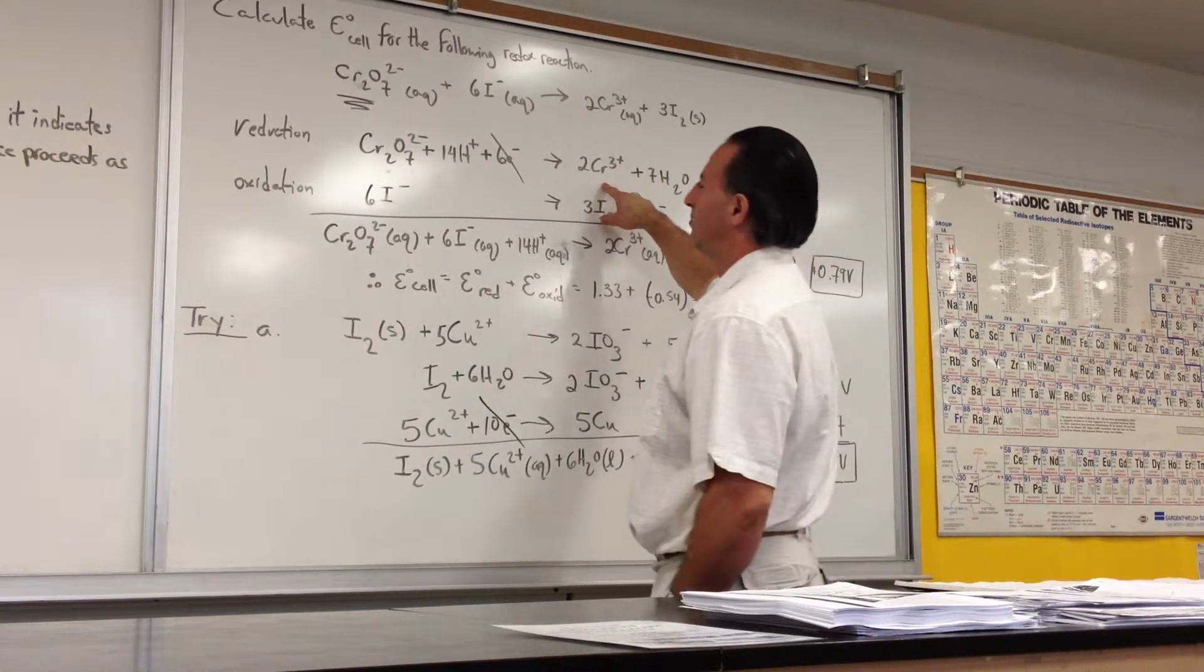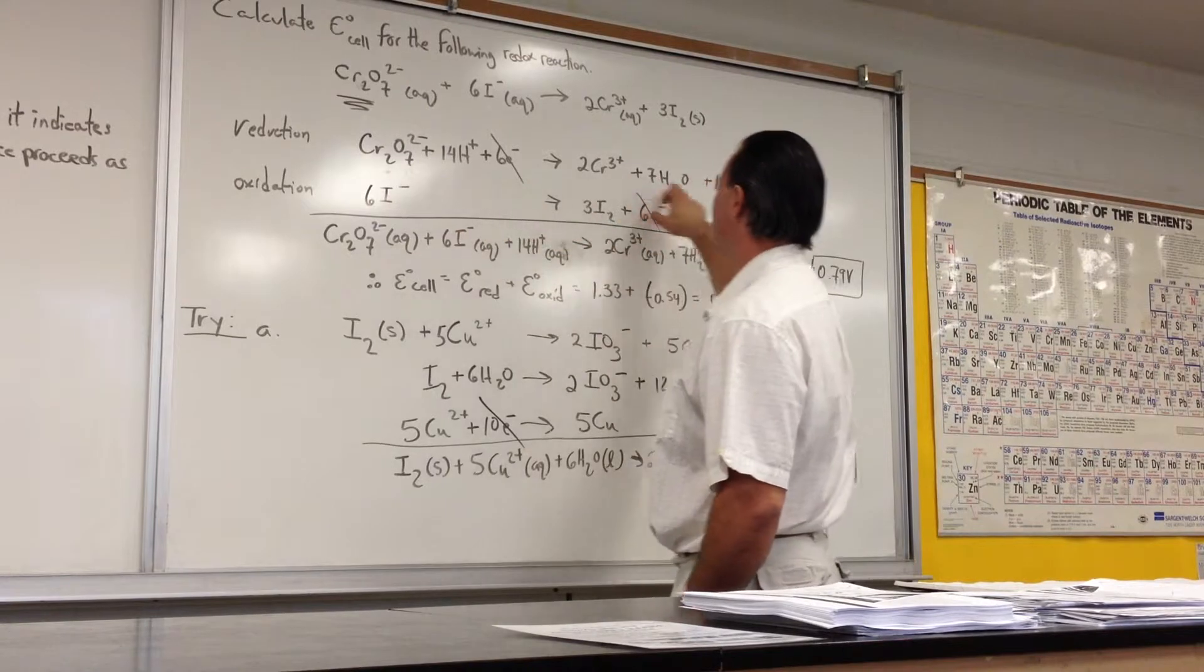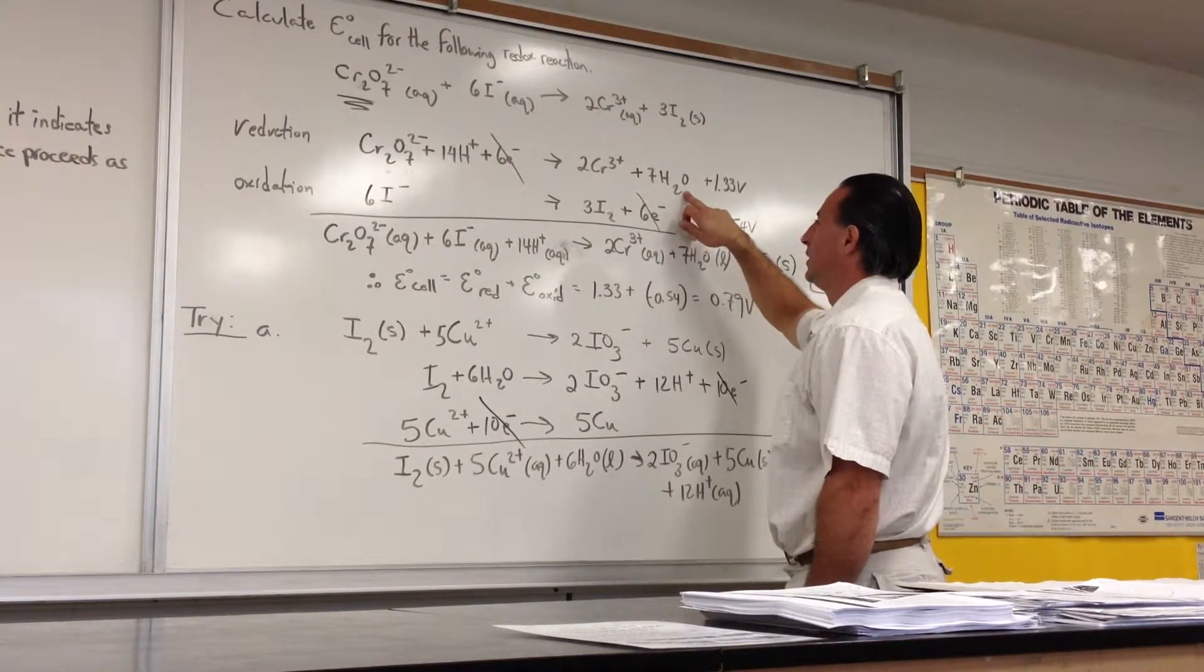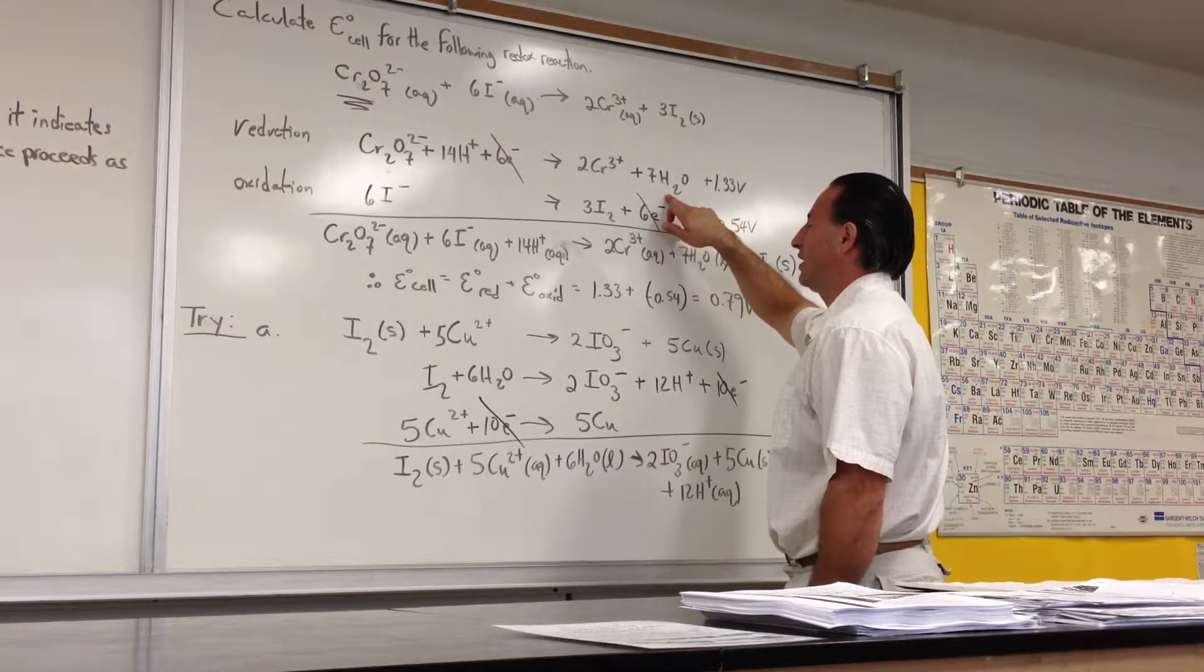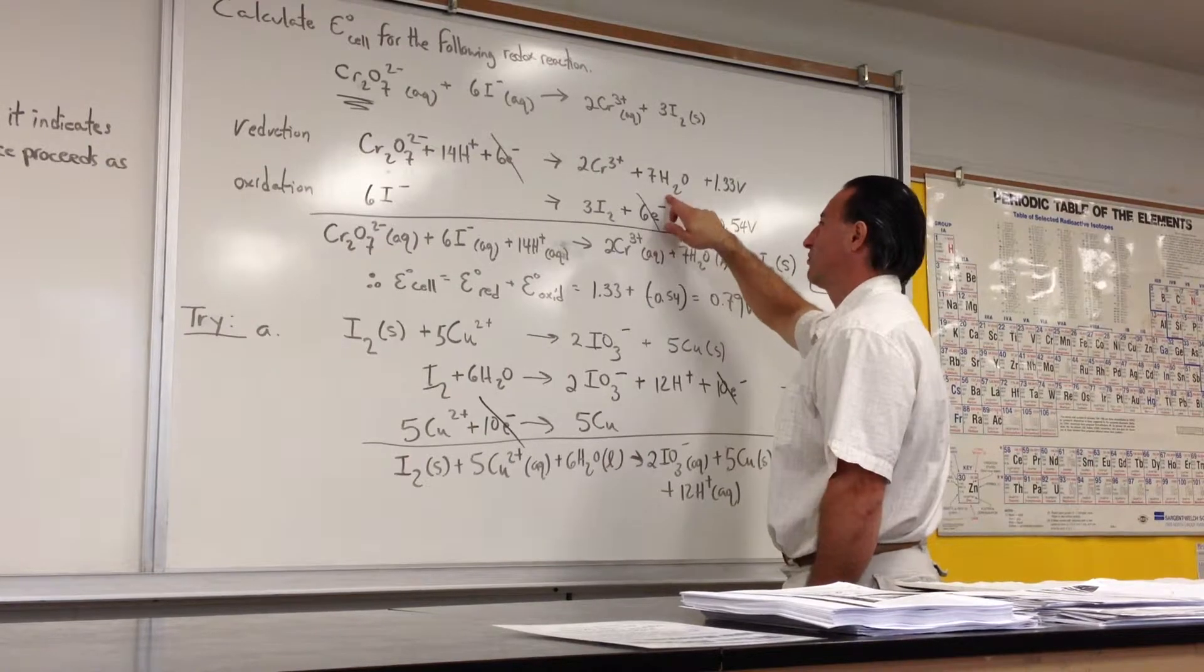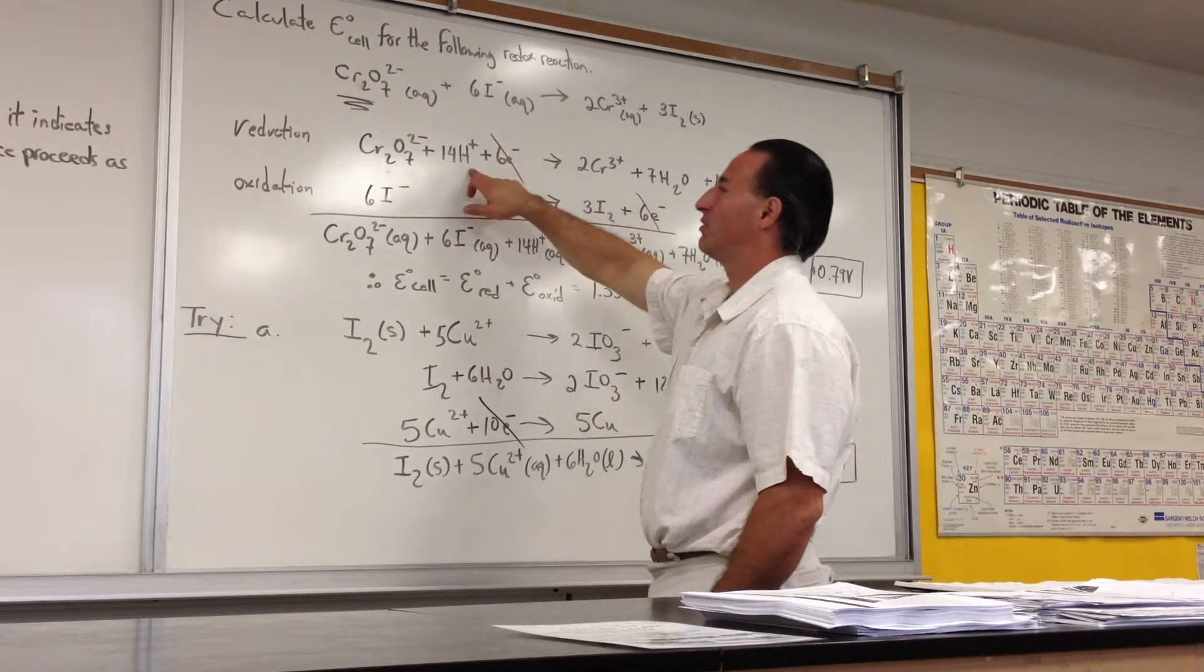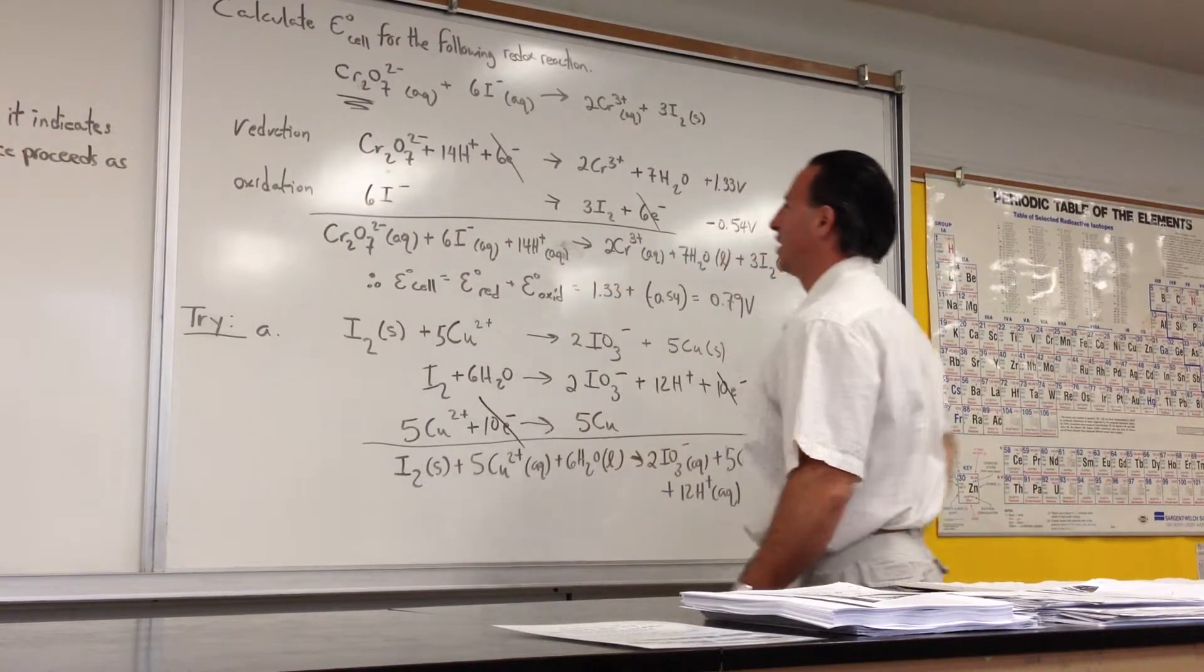And then we balance the oxygens. There are seven oxygens in dichromate, so we have to put seven oxygens on the right-hand side in the form of water. Then, by having introduced seven waters, we have to also account for the fact that now we've got extra hydrogens. So there are 14 hydrogens here attached to the water, so we have to put 14 hydrogens on the left. And the way we do that is by adding hydrogen ions.